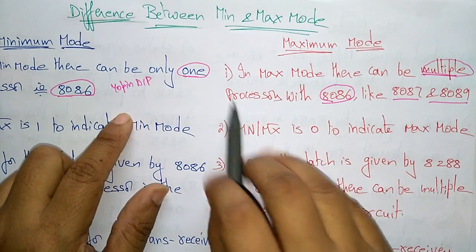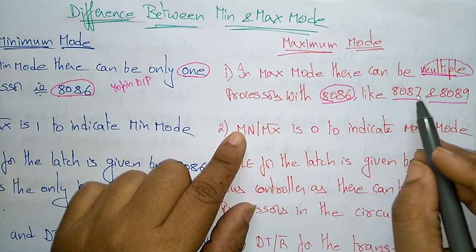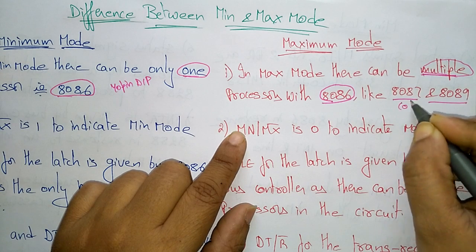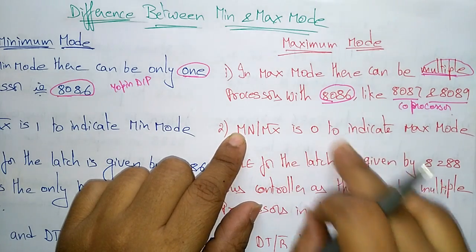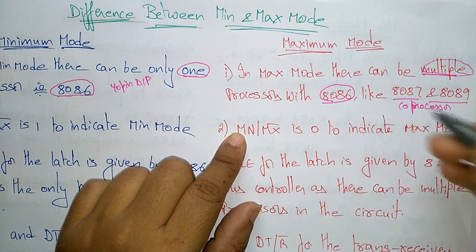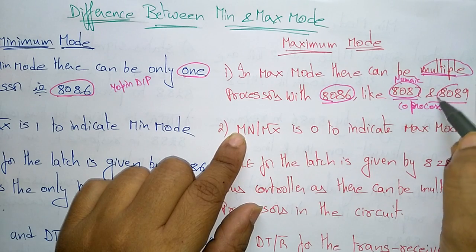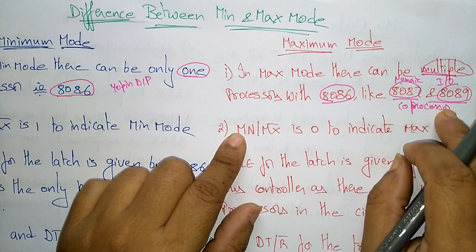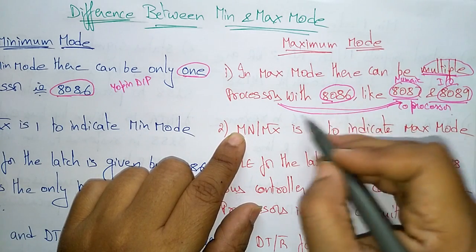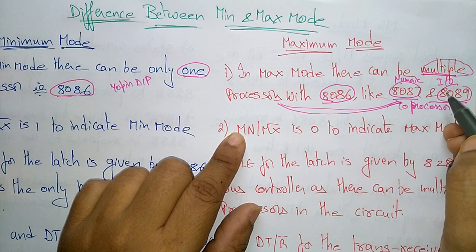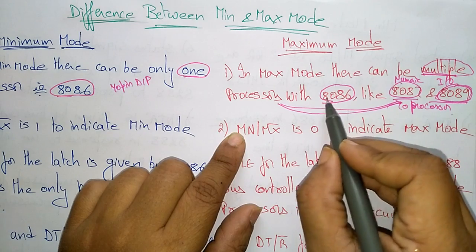In maximum mode, the 8086 is the main processor, and the others — 8087 and 8089 — are called coprocessors. Whenever there is a lot of burden on the main processor, we can attach different processors that perform specific functions. The 8087 handles only numeric operations, while the 8089 handles only I/O operations. When I/O operations are needed, the main processor hands over the system bus to the 8089, which handles those operations while the main processor continues other work.